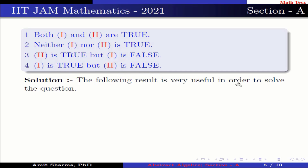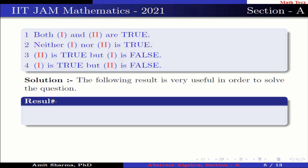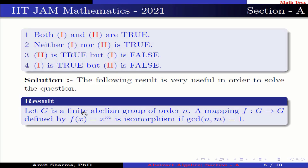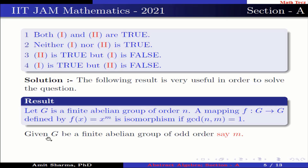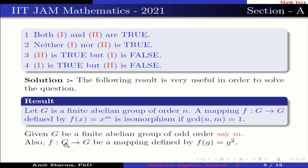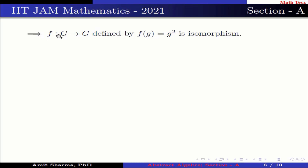The following result is very useful: Let g be a finite abelian group of order n. A mapping f from g to g defined by f(g) = g² is an isomorphism if gcd(n, 2) = 1. Given g is a finite abelian group of odd order m, and f: g → g defined by f(g) = g². Since gcd(m, 2) = 1 because m is odd, this implies f is an isomorphism. Therefore statement 1 is true.